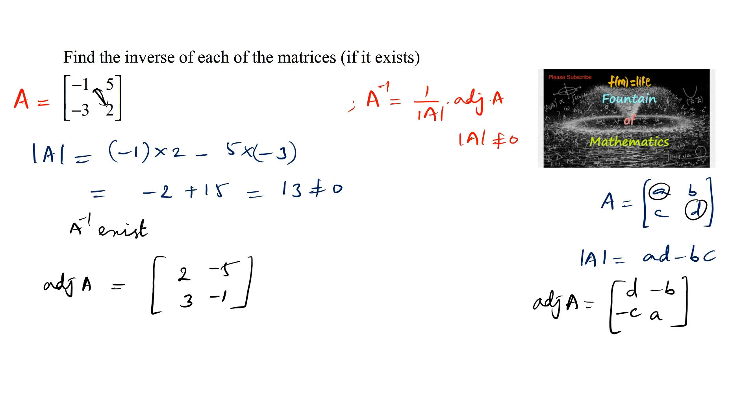And hence we can conclude A inverse is equal to 1 by delta, that is 13, times the adjoint of the matrix, which is 2, negative 5, 3, and negative 1.